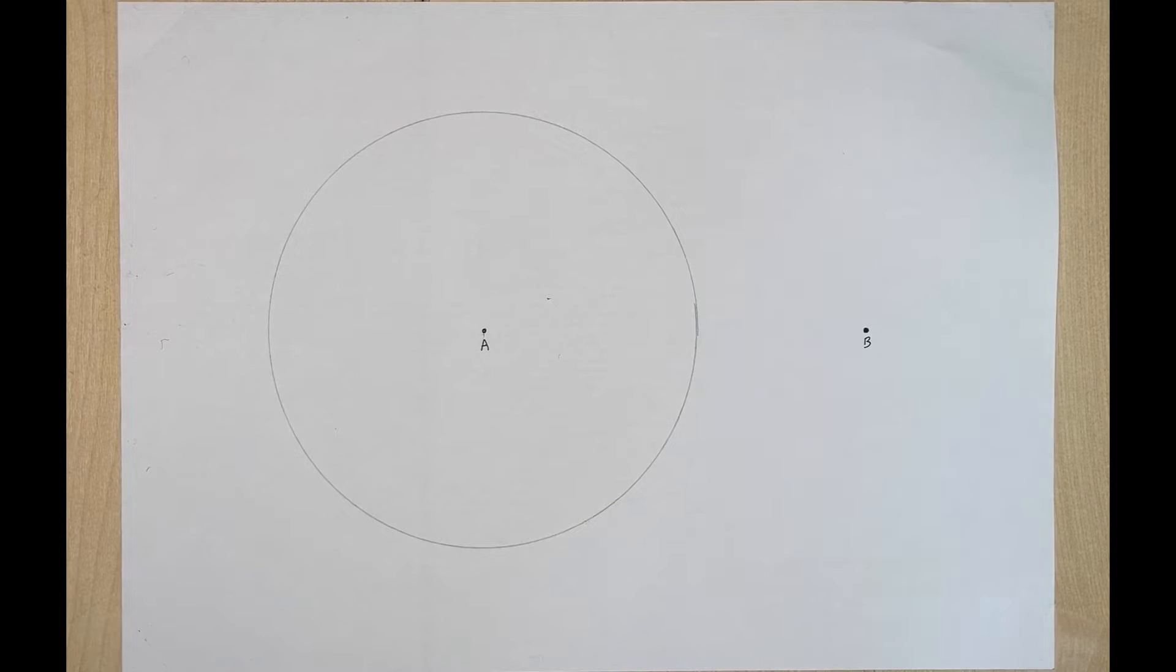Hello everyone, in this construction video we're going to talk about how to construct a tangent to a circle. So this is our setup that we need. We have circle A here and we have point B on the outside of our circle.